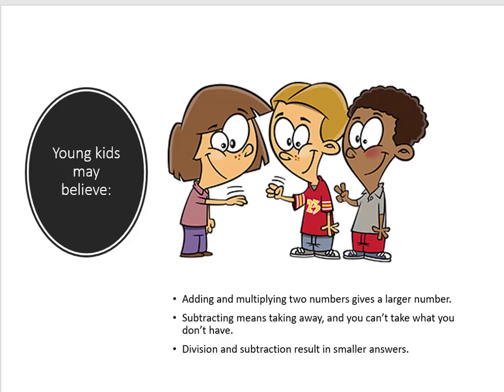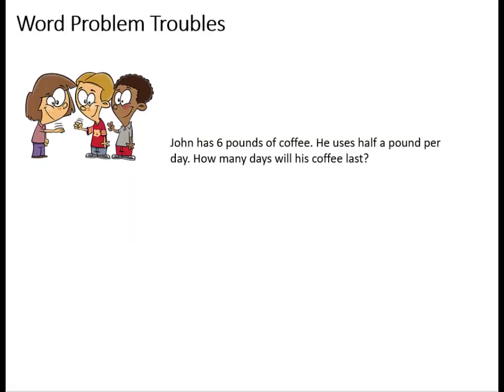One way that applying old number sense can confuse a person is with word problems. In particular, let's examine this word problem. John has six pounds of coffee. He uses half a pound per day. How many days will his coffee last?